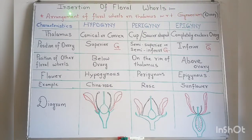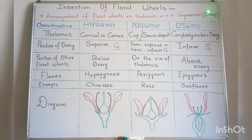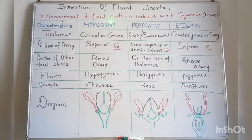One thing to keep in mind: even though we say gynoecium, we will look only at one part of gynoecium, and that is the ovary. With respect to the position of the ovary, the remaining floral whorls will be examined depending on the basis of their arrangement.